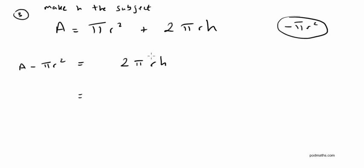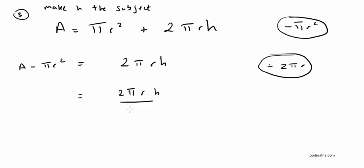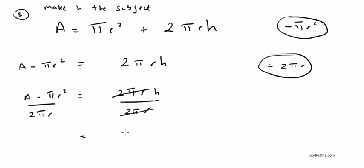The next step is to undo — or eliminate — 2 pi r. It's being multiplied: it's 2 pi r times h. So if I divide both sides by 2 pi r in one step, on the left 2 pi r h divided by 2 pi r gives 1, leaving just h. And on the right I have A minus pi r squared all over 2 pi r. So h equals A minus pi r squared, all over 2 pi r.